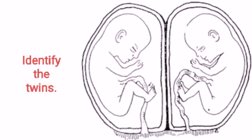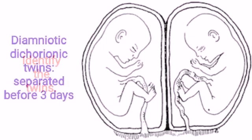Identify the twins: Di-amniotic Monochorionic — separated before 3 days.